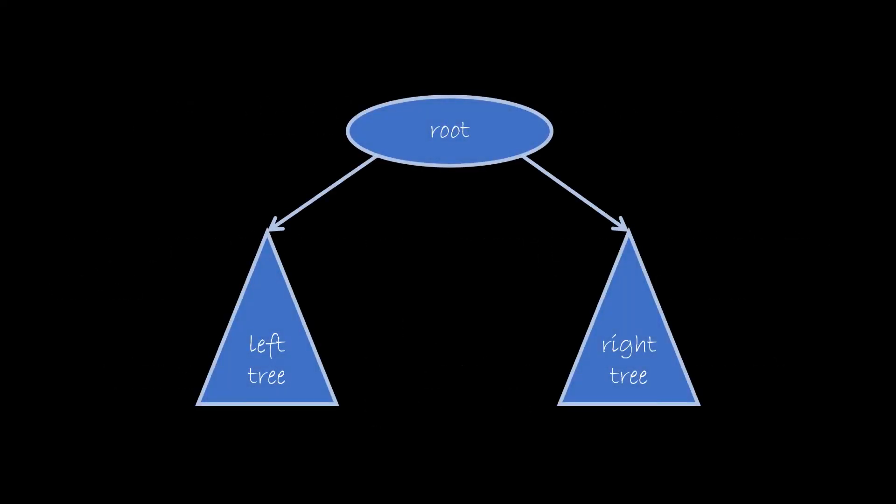If this is a tree where there is a root and two subtrees attached to it, all the values in left subtree will always be less than the value of root.